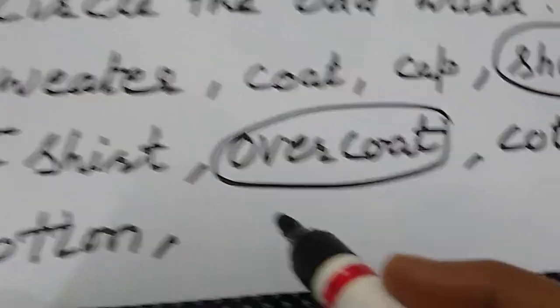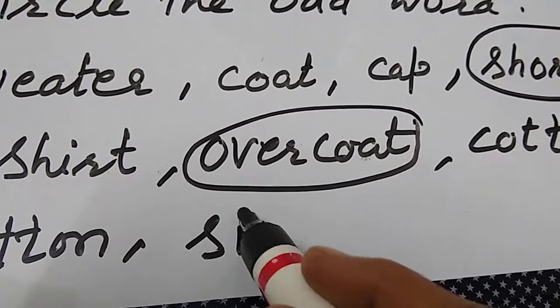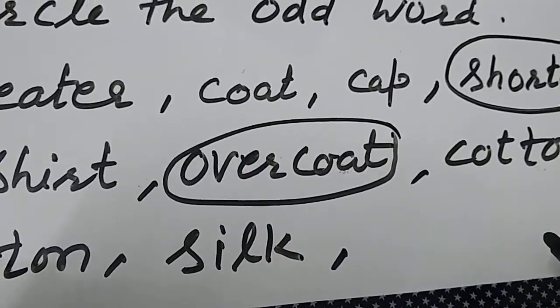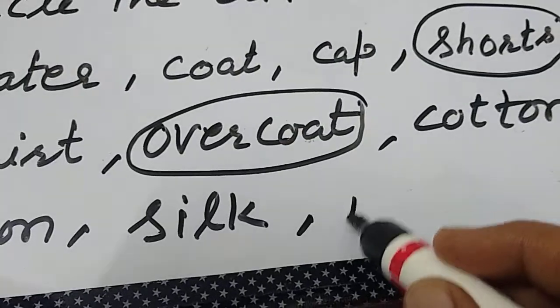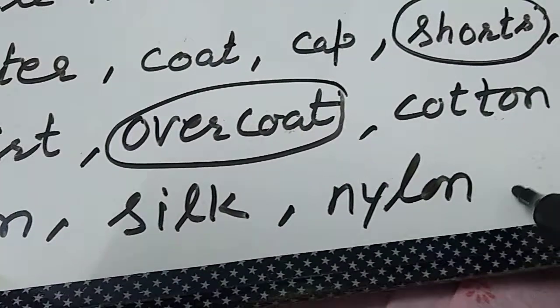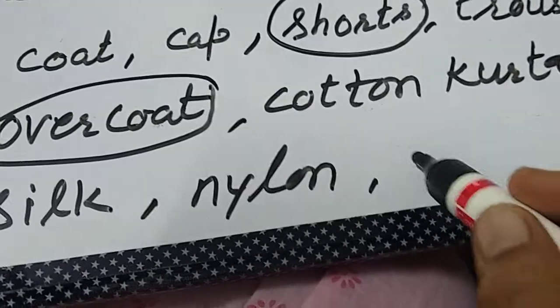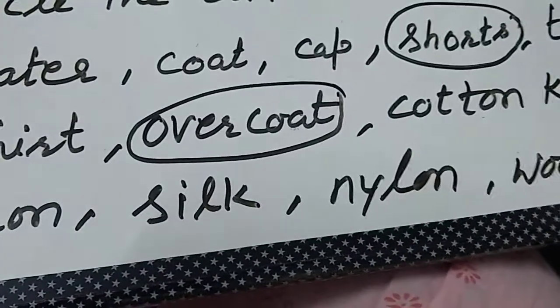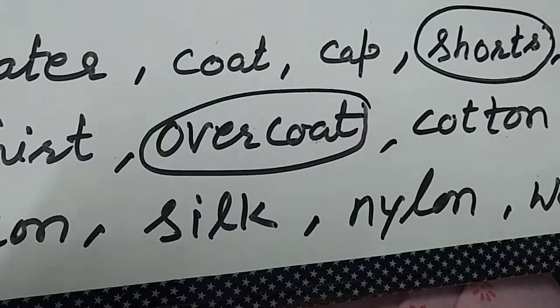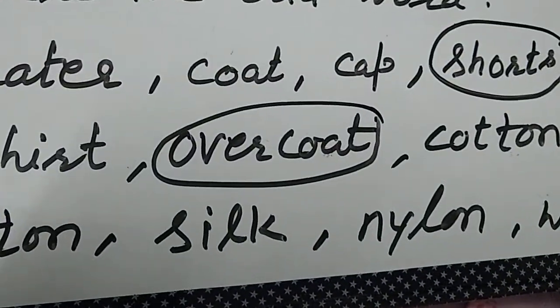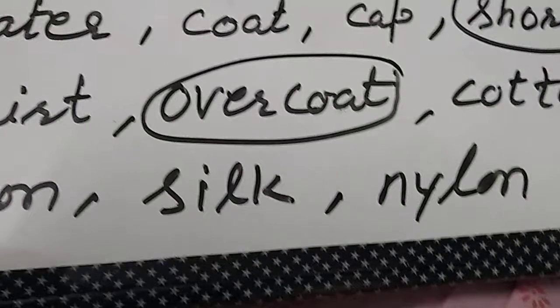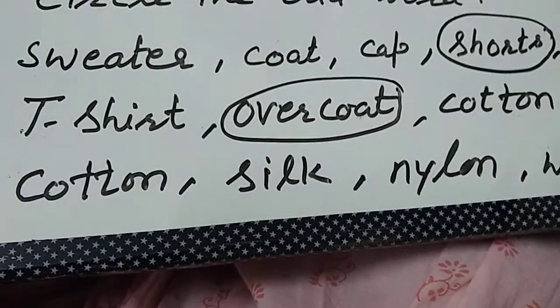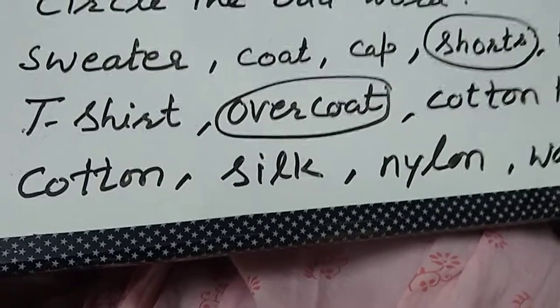Third one: cotton, silk, nylon, and wool. Now you have cotton, silk, nylon and wool. What is the odd one? You will do it yourself. Just like you have done, you will do it yourself.